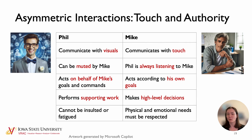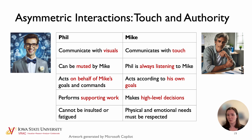Two other interesting topics emerged. The first is asymmetry: Phil manipulates the screen visually while Mike communicates by touch; Phil can be muted by Mike but is always listening. There's asymmetry in authority and initiative — Phil can take considerable initiative but is still acting on behalf of Mike's goals, while Mike makes high-level decisions according to his own goals. And there's asymmetry from the human-agent relationship itself: Phil cannot be insulted or fatigued, whereas Mike has real physical and emotional needs — Mike can be rude to Phil without consequence, but Phil is expected to remain respectful.